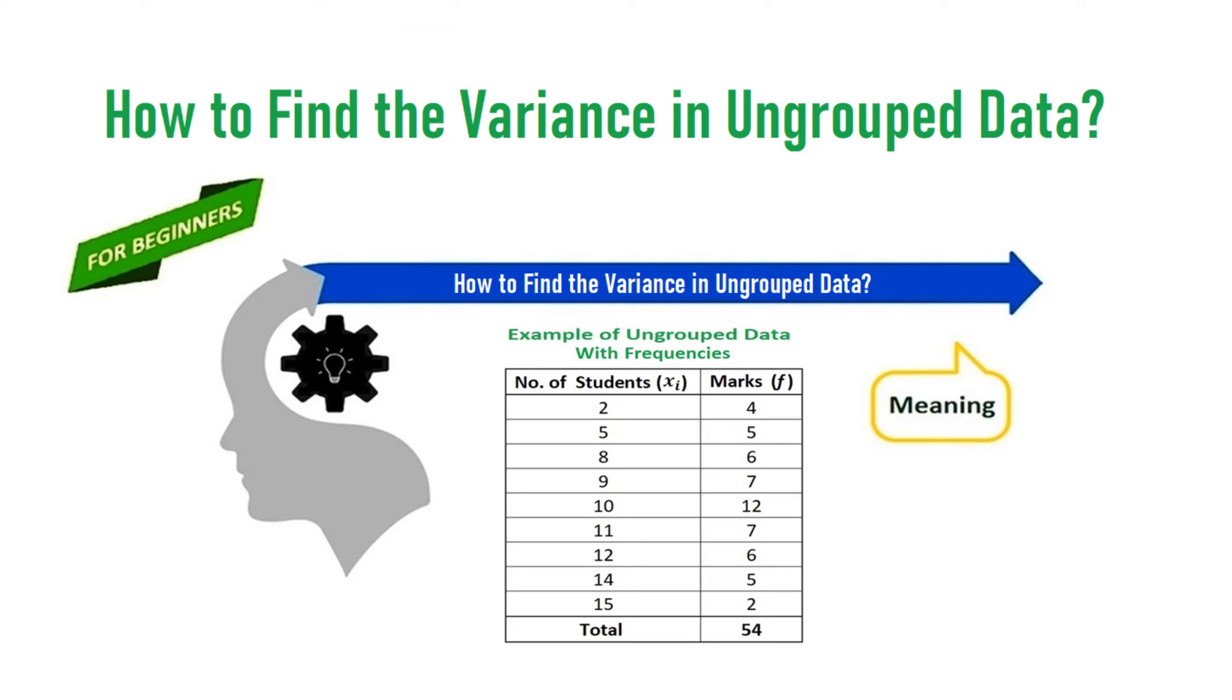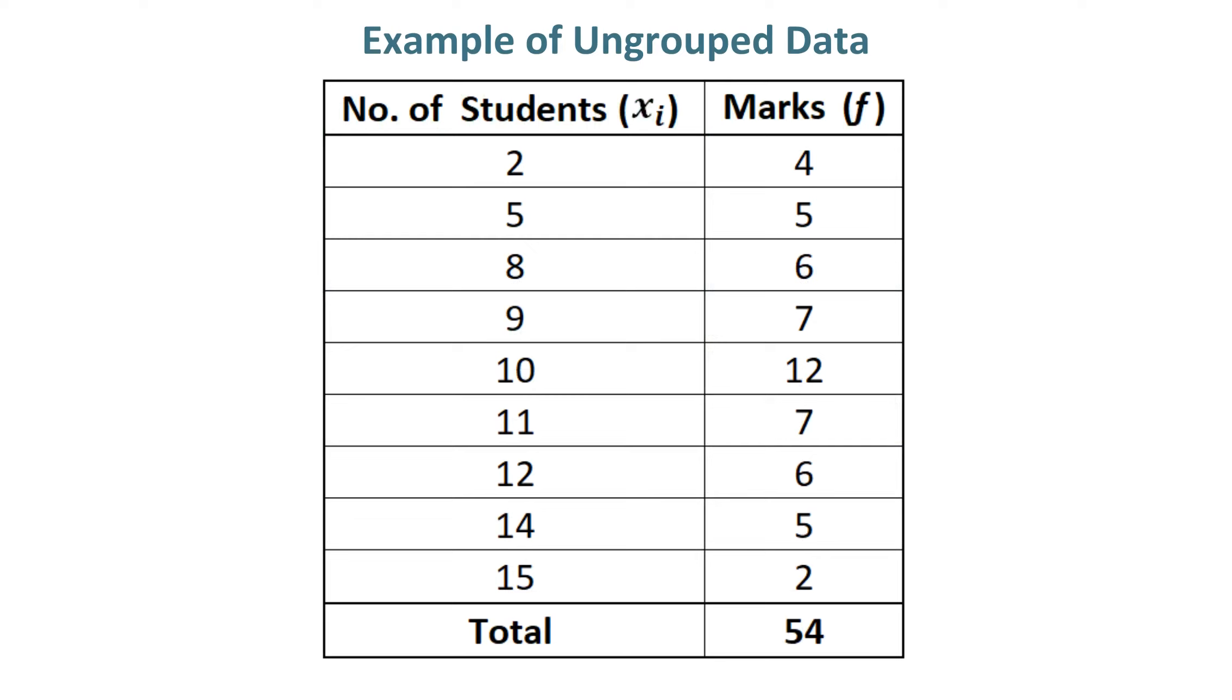How to find the variance in ungrouped data. Example of ungrouped data. How to find the variance in ungrouped data by using data of 54 students and their obtained marks.